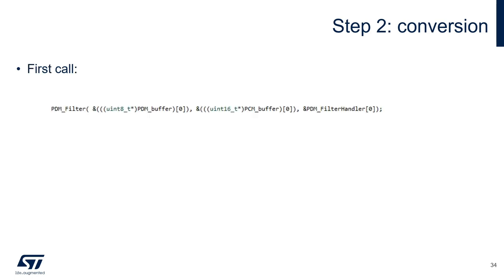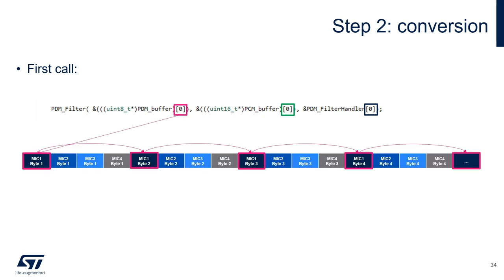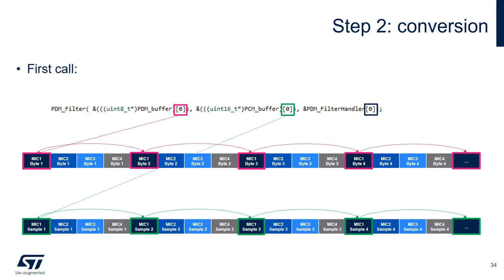During the first call, we pass pointers to the first byte of the PDM buffer, the first half word of the PCM buffer, and the first handler. Since we define the input channels number equal to 4, the library will read one PDM byte over 4, starting from the first one. In the same way, since the output channels are defined equal to 4, the library will write one half word for each 4 in the output buffer, starting from the first one.